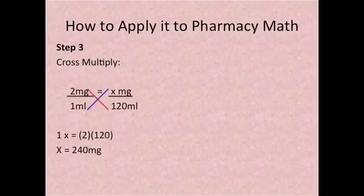Step 3. Cross multiply. 1 times x is equal to 2 times 120. This was easy. All you have to do is x is equal to 240 milligrams.